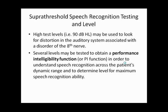High test levels — for example, 90 dB HL — may be used to look for distortion in the auditory system associated with an eighth nerve site of lesion, which could be representative of an acoustic neuroma or vestibular schwannoma — terms used interchangeably for a tumor on the eighth nerve. Several levels may be tested to obtain a performance intensity function, also called a PI function, to understand speech recognition ability across the patient's dynamic range and determine the levels for maximum speech recognition ability.